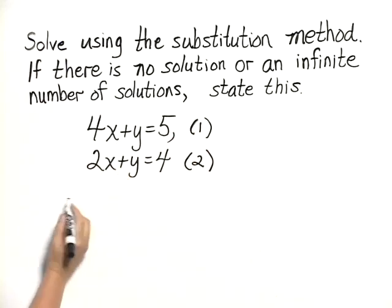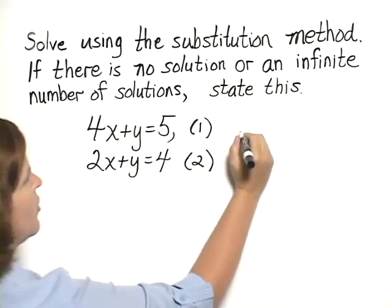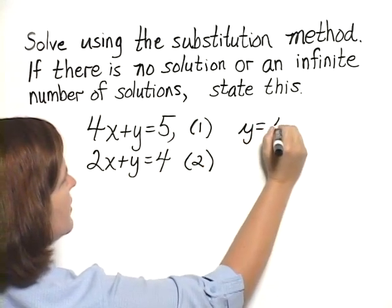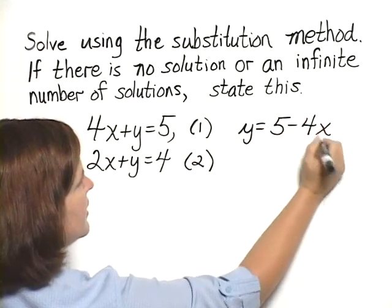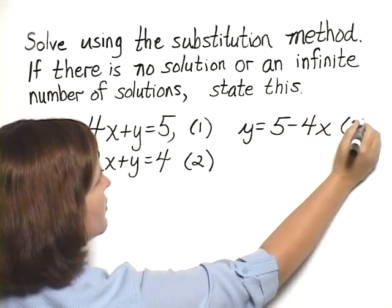Subtracting 4x from both sides, I end up with y equals 5 minus 4x, and let's just call that equation 3.